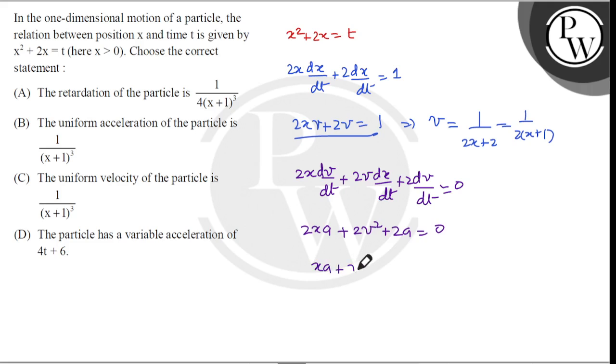xa plus v square plus a equals zero, and this is a common 1 plus x, equals minus v square.